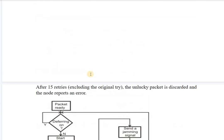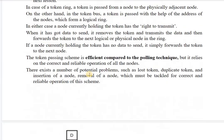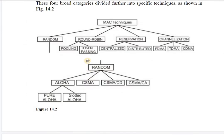This was all about Medium Access Control protocols. They are of four types as seen in the diagram; the random access or contention-based techniques are of most concern, and the MAC sublayer uses these four protocols. We also covered round robin techniques — polling and token passing — reservation, and channelization. This was all about MAC techniques. Thank you so much. Take care. Bye.